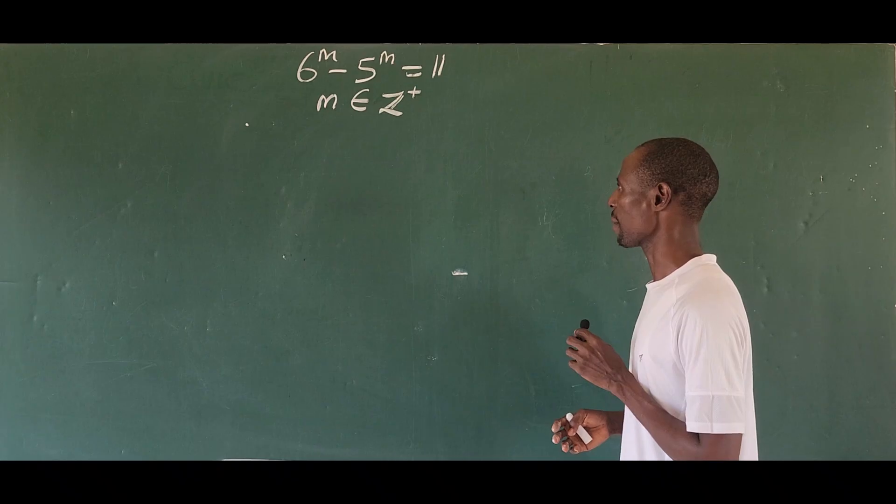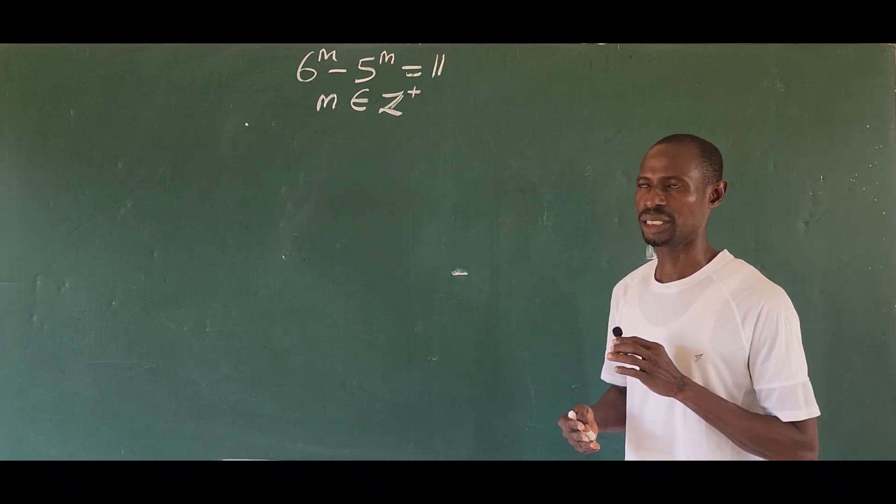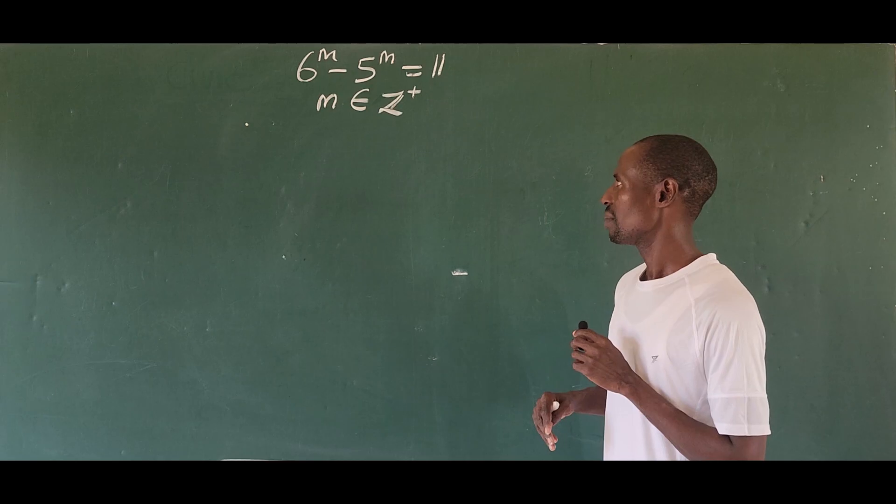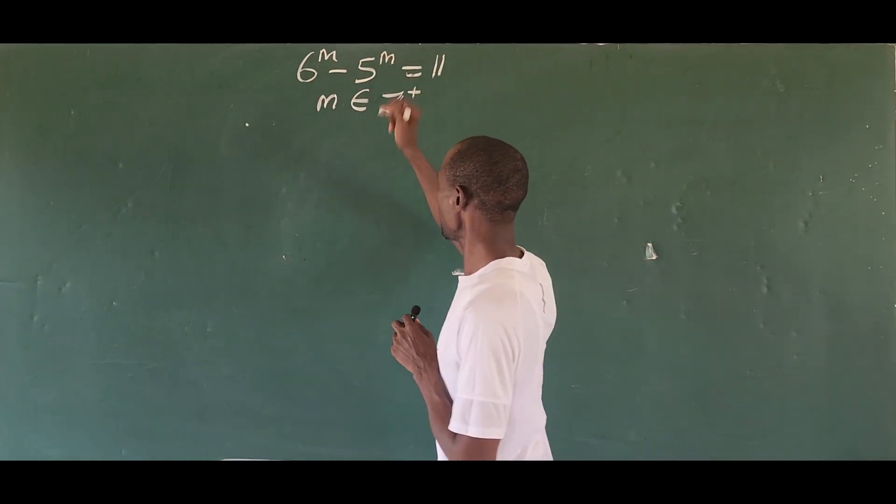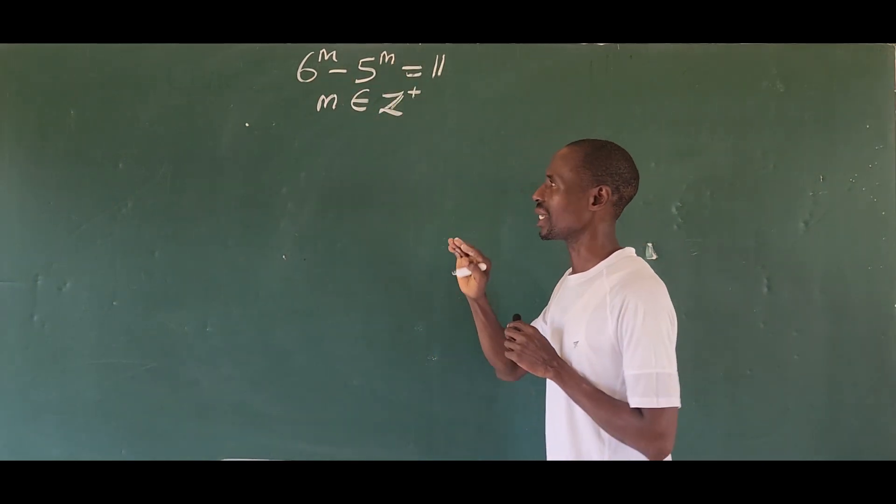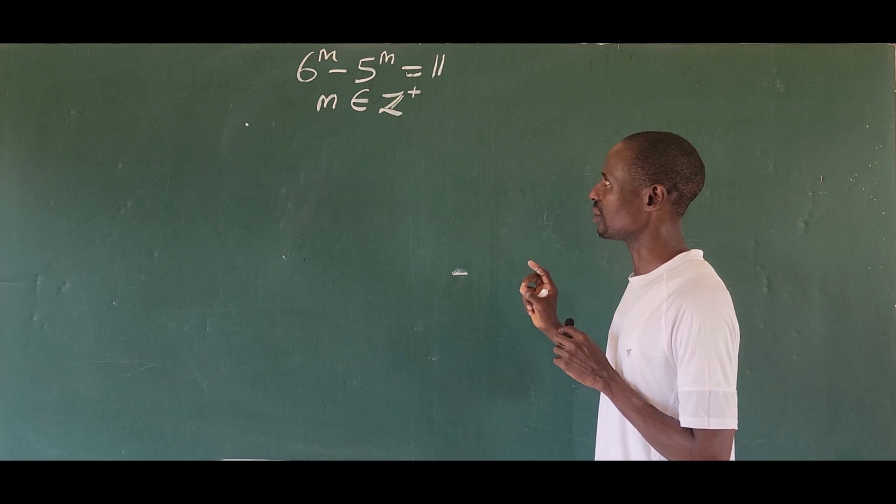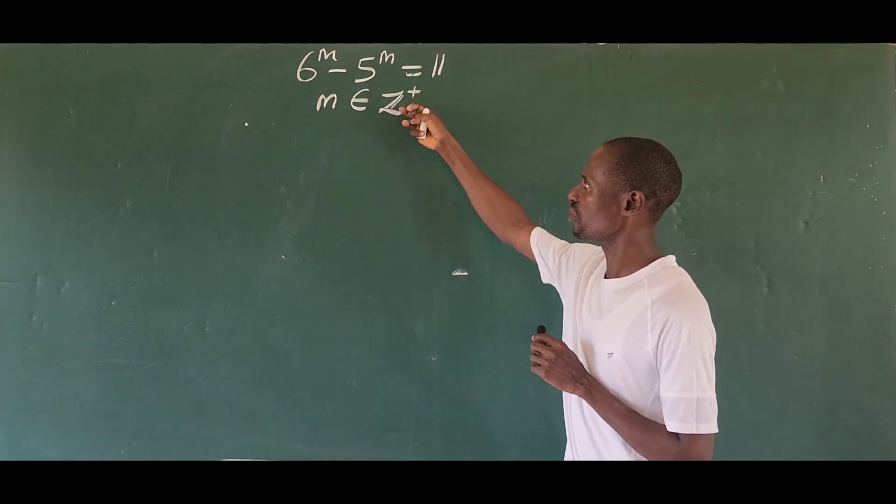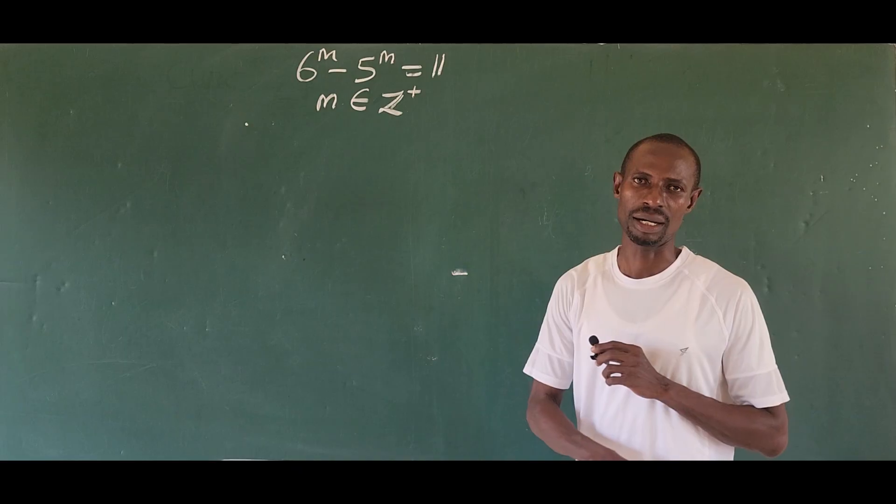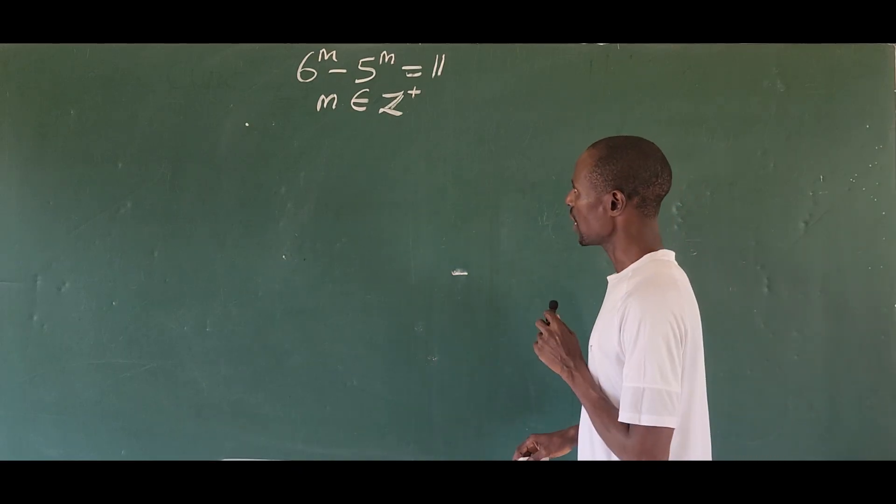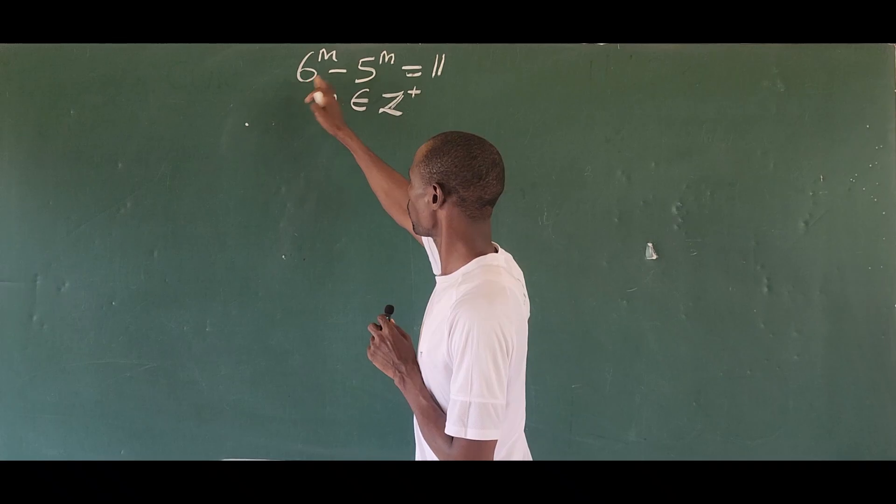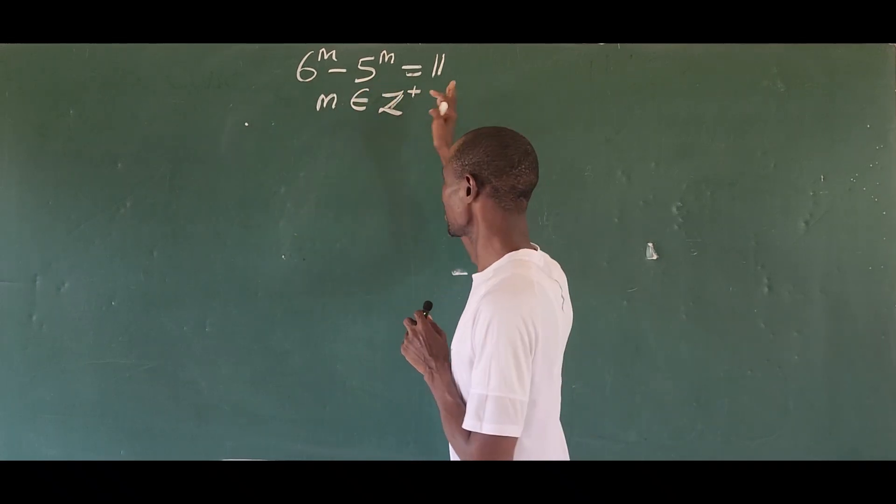Now if you check out this question here, you'll discover that we just by guessing you can get the answer to this. Because here we have m here, here we have m here. And so we can decide to take the value of m ranging from zero to any other number because we decide m is a set of positive integer. So if we decide to put a zero here, put zero here, that will give us one minus one, which will give us zero. And that is not eleven.